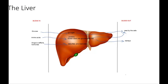Any waste would go to the kidneys. The blood also has vitamins and minerals in it, and those vitamins and minerals, once they make it into the liver, are stored there. The liver stores vitamins A and D and also iron. The red blood cells only live for a certain time period, so the old red blood cells as they pass through into the liver are destroyed and eventually released as waste into the gallbladder.